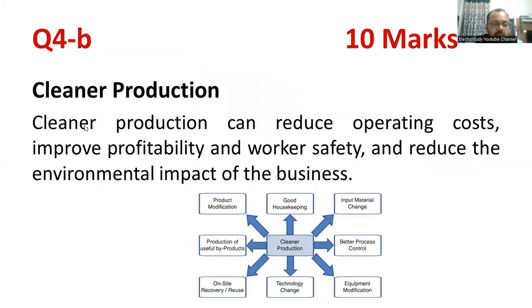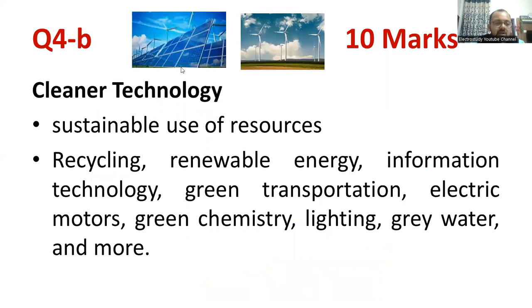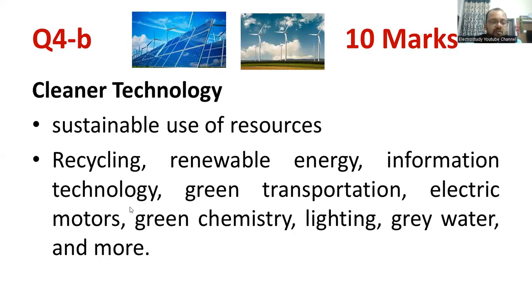For cleaner production, explain what it is: improve the profitability, worker safety, reduce the environmental impact, then product modification, good housekeeping — these are examples of cleaner production, and it is mandatory for all types of industries. Then for cleaner technology — it is one concept of sustainable development: usage of solar power, usage of wind power, non-conventional sources of energy. Then the triple-R concept: reduce, reuse, recycle. Then green chemistry — for instance, instead of using artificial color, go for synthetic color.